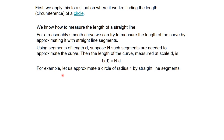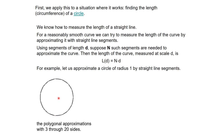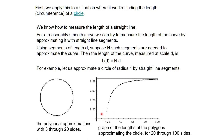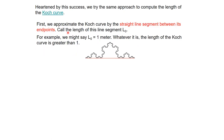Let's see the polygonal approximation with three to twenty sides. If we have only three sides of a polygon, we get one kind of curve; with four sides, a better one; and as the number of sides increases, we get better and better approximation. The graph shows the length of polygons approximating a circle from 20 through 100 sides. With radius one, the circumference approaches 2π, and with 20 sides the length is already very close to 2π.